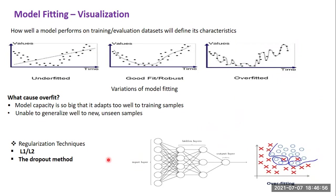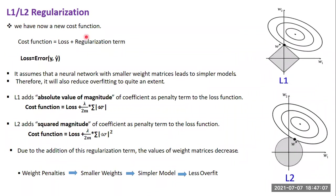To solve overfitting, we use different regularization techniques. The most widely used are L1 and L2 regularization, and the dropout method. In regularization techniques like L1 and L2, the key idea is adding a new term to the cost function, so: cost function = loss + regularization term. This term is the absolute value of the magnitude in the case of L1, and the squared value of the magnitude in the case of L2. The key idea is to penalize the model weights, making them smaller, and smaller weights lead to a simpler model that is less prone to overfitting.